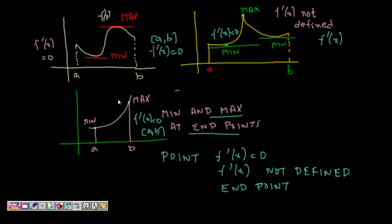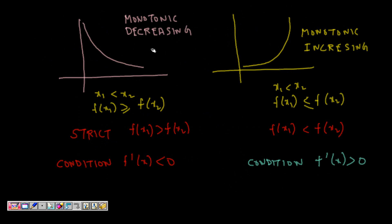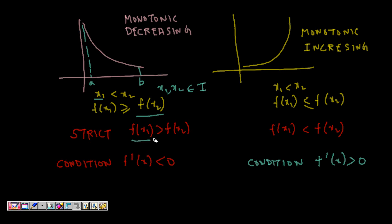I used the word monotonically increasing, so let's look at what a monotonically increasing function is. This function is continuously decreasing in the interval a to b — it becomes monotonous and we say it is monotonically decreasing. The definition: for all points x1 and x2 belonging to the interval, if x1 is less than x2, then f(x1) should be greater than or equal to f(x2). But if it is strictly decreasing, then f(x1) should be strictly greater than f(x2).